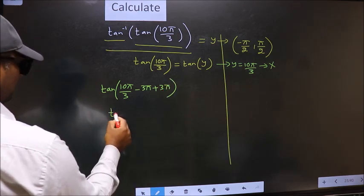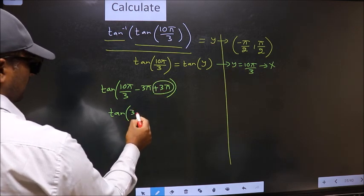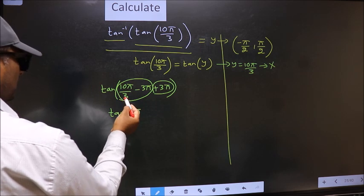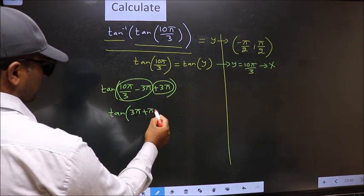Next, tan... Now 3π I write at the start. This you calculate: 10π/3 minus 3π, we get plus π/3.